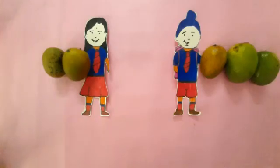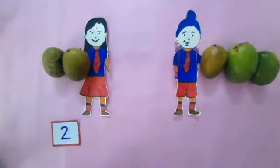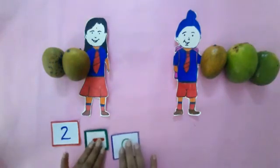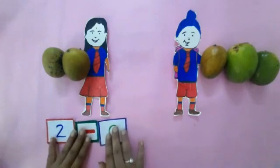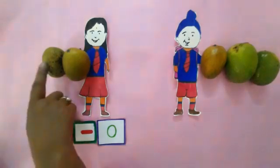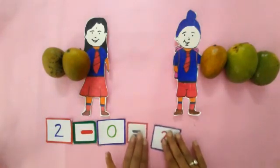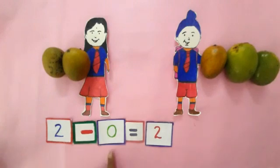Dear children, Winnie is having 2 mangoes and she did not give any mangoes to anybody. How many mangoes is she having now? 1, 2 — she is having 2 mangoes. 2 minus 0 is equal to 2.